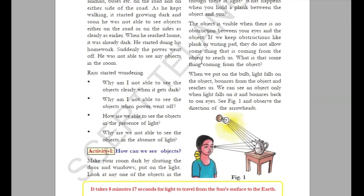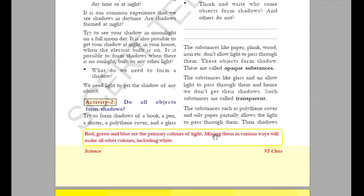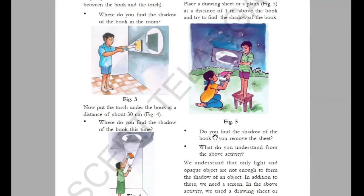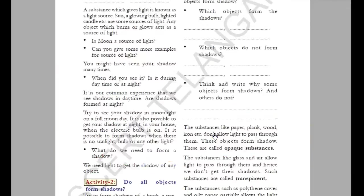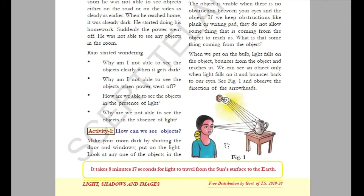Light is nothing but what is emitted from the source. In this chapter, you have some experiments. In the 'Light, Shadow and Images' chapter you learnt about light and shadow. If you see this picture, you can see that some light emitted by a bulb falls on the mug and gets reflected back to reach our eyes. That is how we are able to see objects.